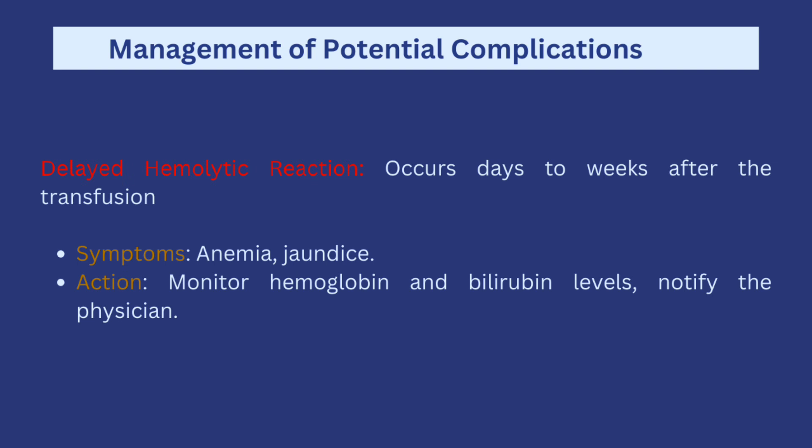There can also be a delayed hemolytic reaction, which happens days to weeks after the transfusion has been done. Symptoms can include anemia and jaundice. Actions include monitoring hemoglobin and bilirubin levels by consistently sending blood samples to the lab, and notifying the physician for the next line of action. I hope you now understand blood transfusion — click on the playlist to see more of my videos, and I'll see you in the next one!